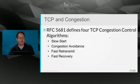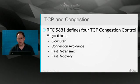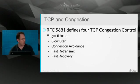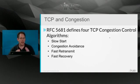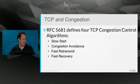RFC 5681 defines the four congestion control algorithms or mechanisms: slow start, congestion avoidance, fast retransmit, and fast recovery. We're going to go over all of these. The next video after this one will deal with slow start, and the final video after that will deal with the last three.